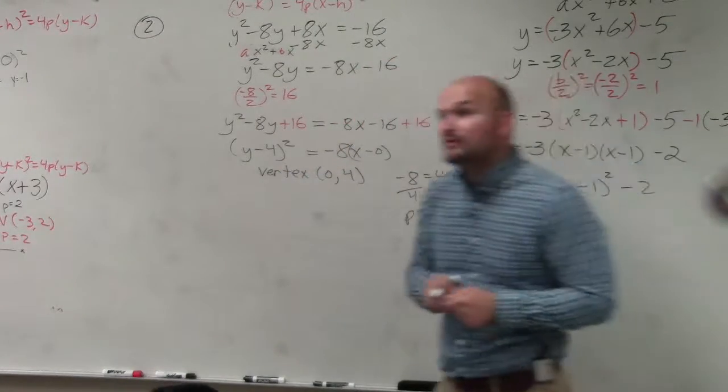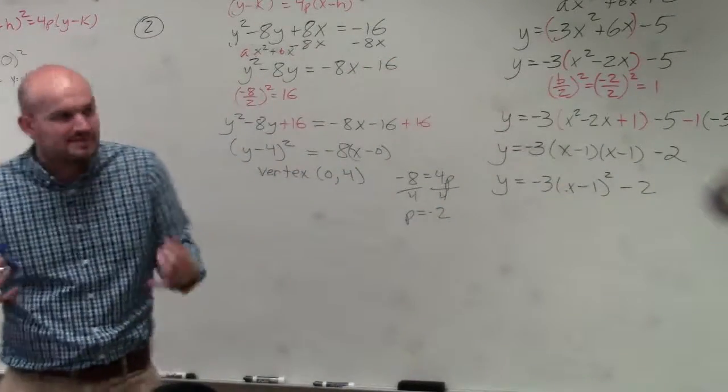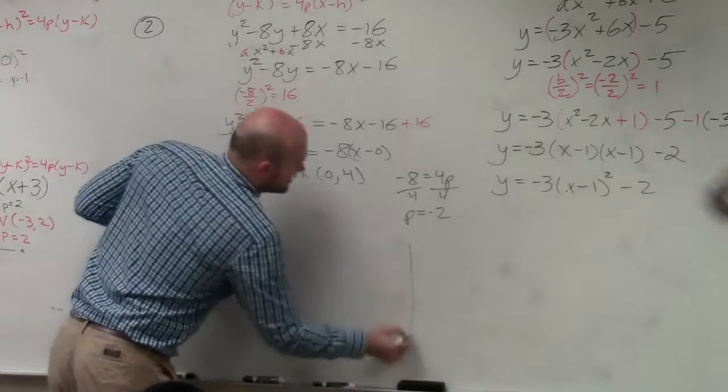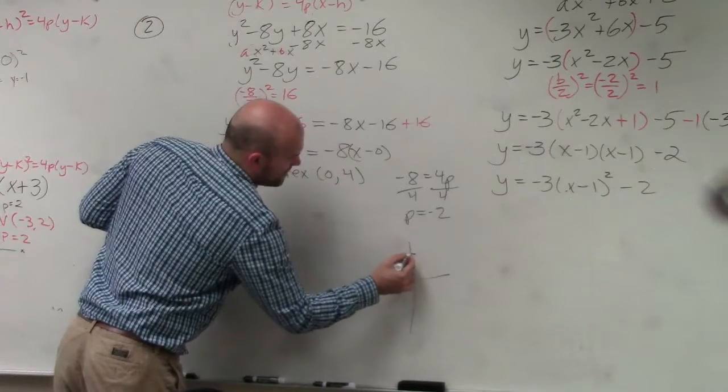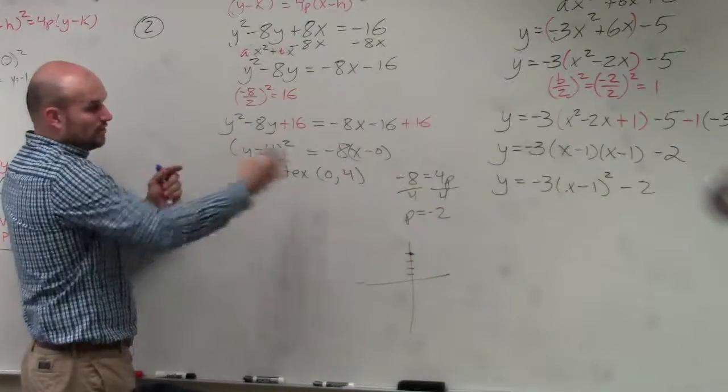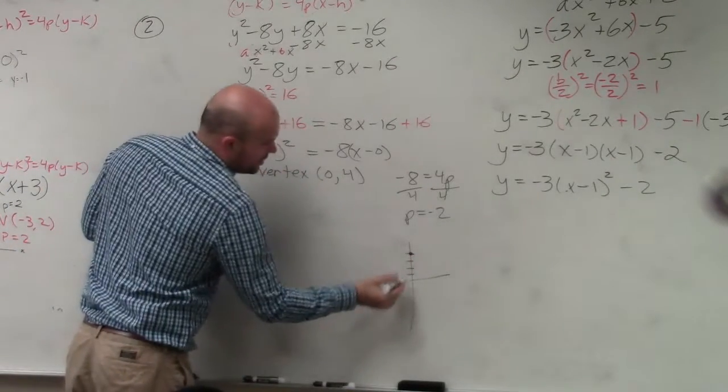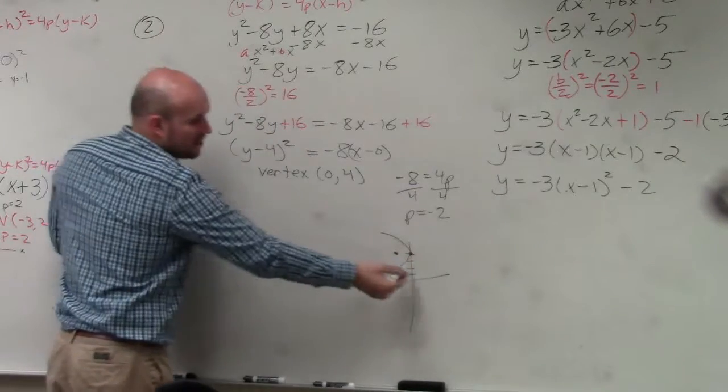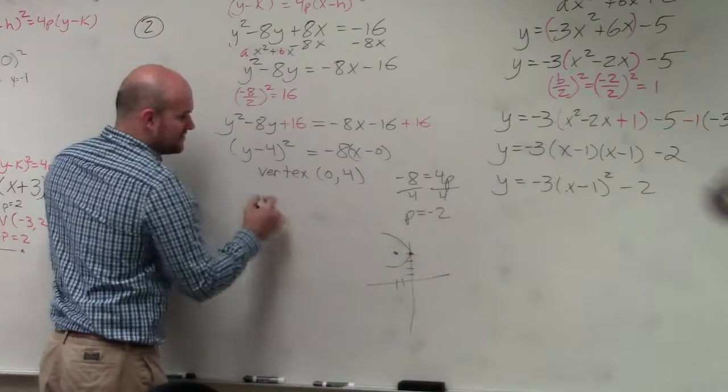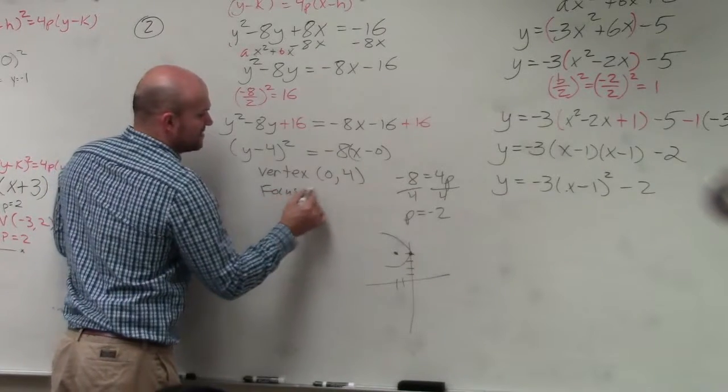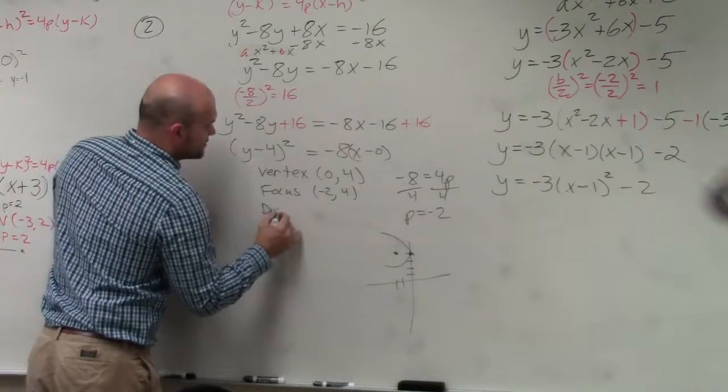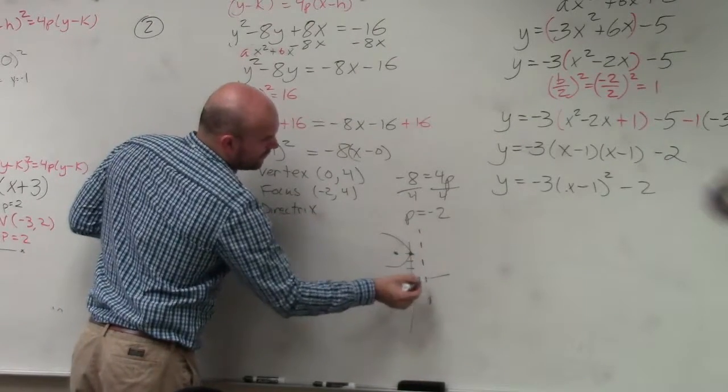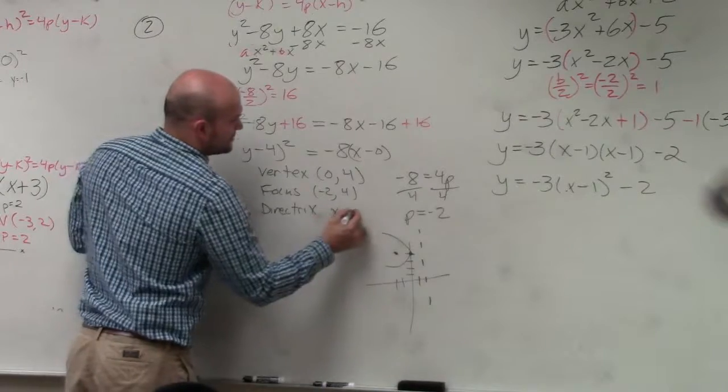Now, again, people get confused. So, again, sketch a graph. When you guys are taking your quiz, you'll have a huge piece of paper. Sketch a graph. I've got to rush in here. Vertex is 0, 4, 1, 2, 3, 4. The graph, y squared, so it opens left to right. P is negative, so it's going to open up to the left. So, if here's 0, 4, if I go to the left 2, that means my focus is at negative 2, 4. And my directrix is a vertical line over 2, which is x equals 2.